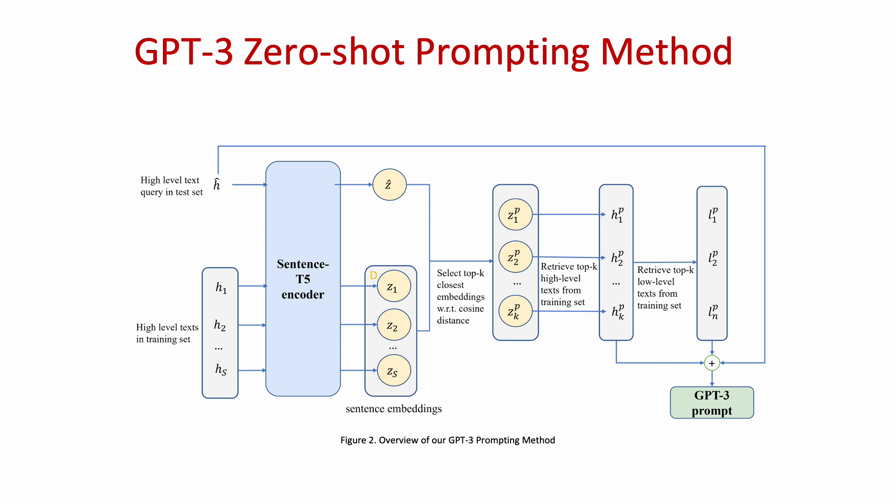In this work, we first retrieve the top-k most similar training examples for each high-level text query in a test set. We accomplish this by pre-computing a dictionary D of high-level sentence T5 embeddings. Then during inference, we obtain the embedding of the high-level test query, calculate cosine similarity with the dictionary D, and retrieve the top-k most similar high-level training text.